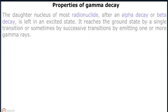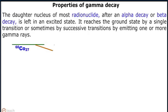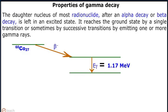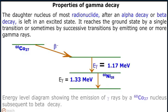Properties of gamma decay: The daughter nucleus of most radionuclides after alpha decay or beta decay is left in an excited state. It reaches the ground state by a single transition, or sometimes by successive transitions, by emitting one or more gamma rays.